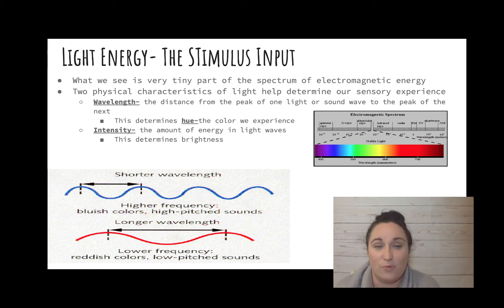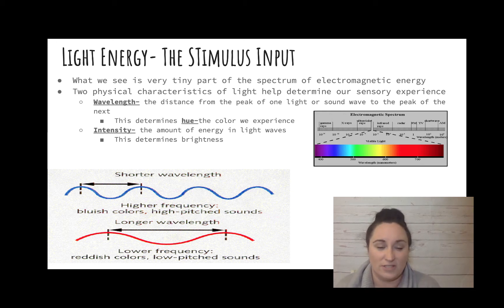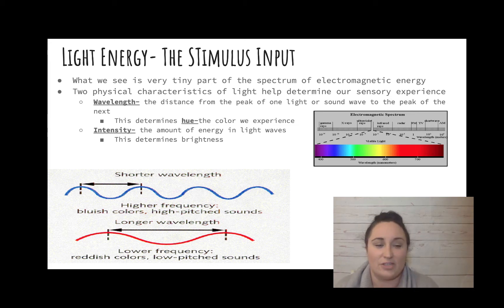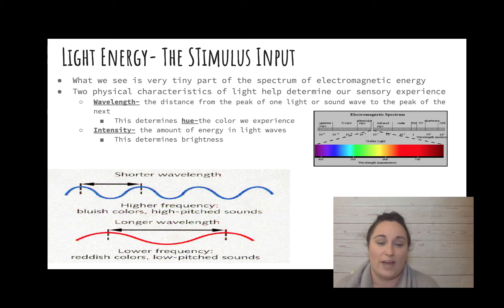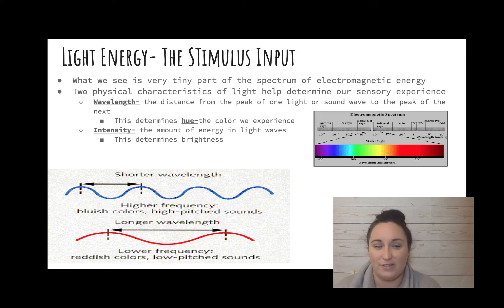There are two physical characteristics of light you need to know. The first is wavelength — the distance from the peak of one light wave to the peak of the next. Blue has a shorter, higher frequency wavelength, whereas red has a lower frequency with fewer waves in the same amount of time. On the visible light spectrum, towards red is lower frequency, and towards blue and purple is higher frequency, shorter wavelength.